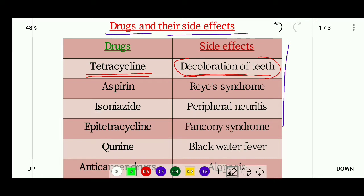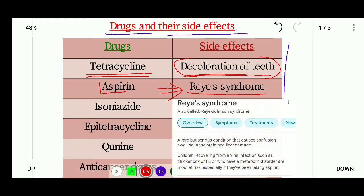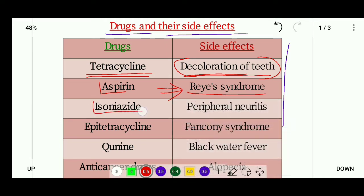The next drug is aspirin. The side effect of aspirin is Reye's syndrome. This question came in GPAT 2021. Reye's syndrome is a very rare but serious condition which causes confusion, swelling in the brain, and liver damage.